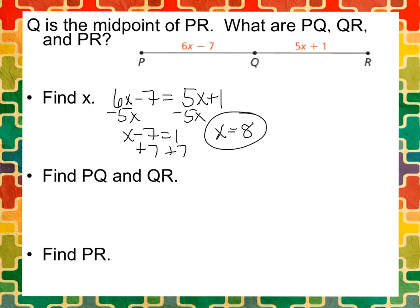Now that I have my variable, I'll plug it in for PQ. So I'll do it in different colors. You get 6 times 8 minus 7 equals 41. So that was just PQ that we found. So QR should be the same thing. It should be 41, but let's check.